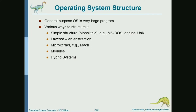Now, operating system structures. We will be discussing four kinds of structures: a simple monolithic structure (or no structure basically), layered, microkernel, and modules.